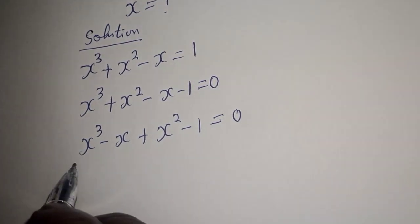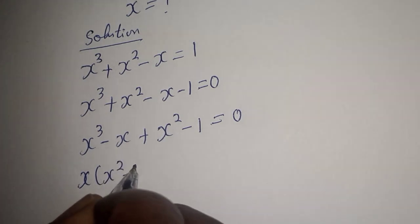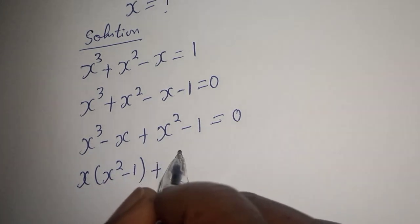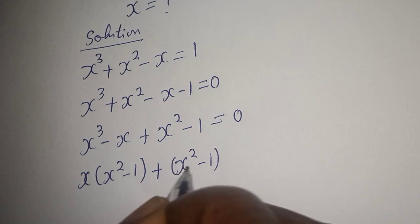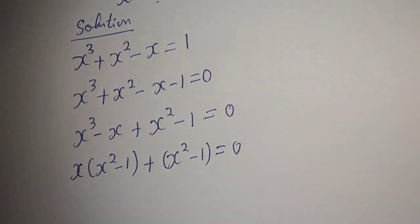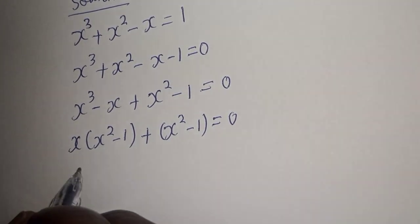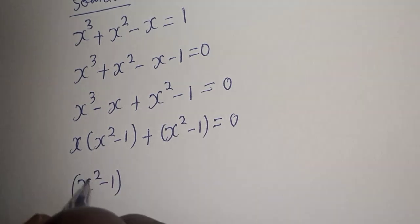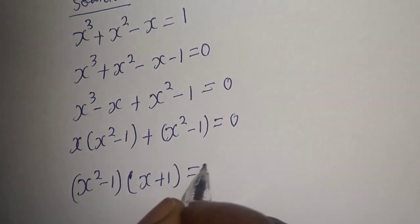Now from here, s is common, we have s bracket s square minus 1 plus s square minus 1 is equal to 0. We can see that s square minus 1 is also common. Let's bring it out. Here is s square minus 1. And if we divide this by this, we have s. If we divide this by this plus 1 is equal to 0.